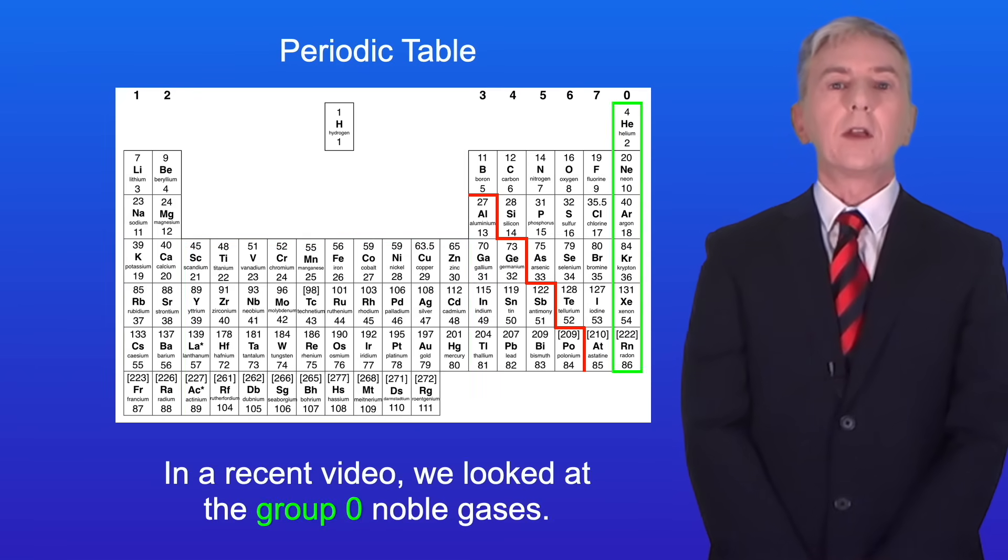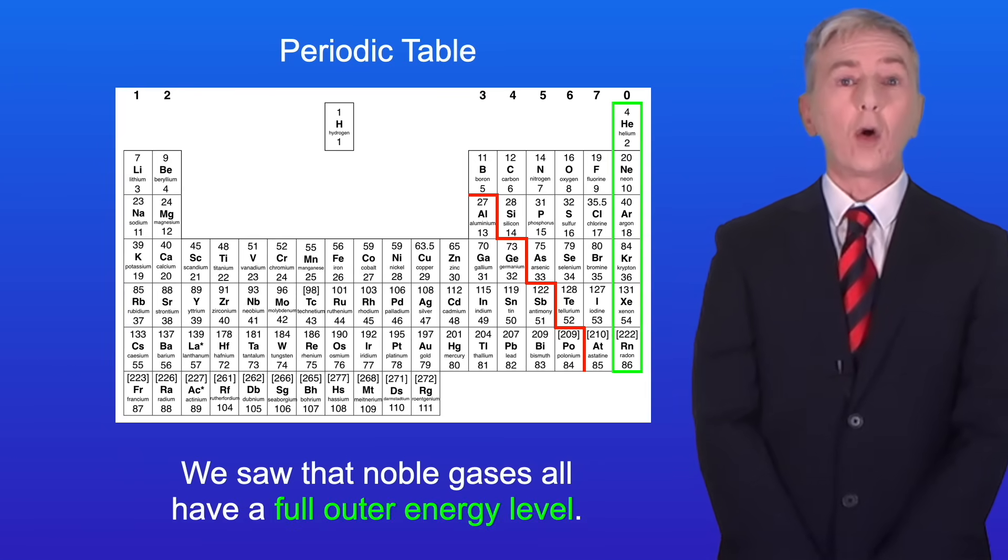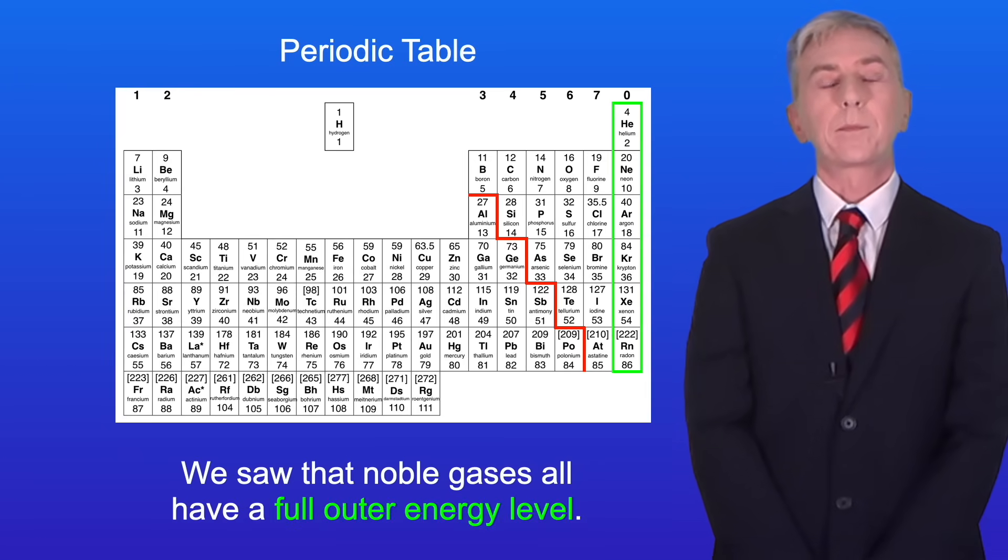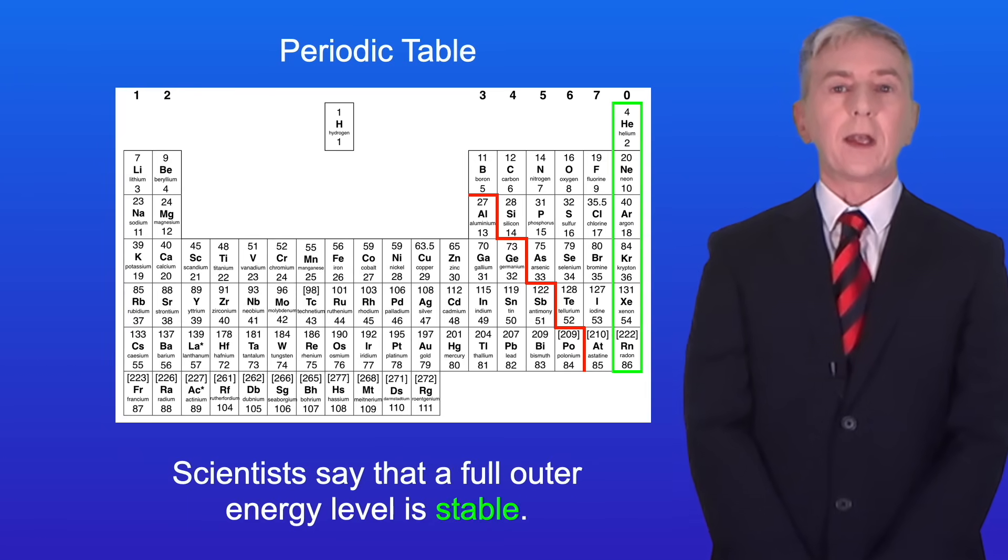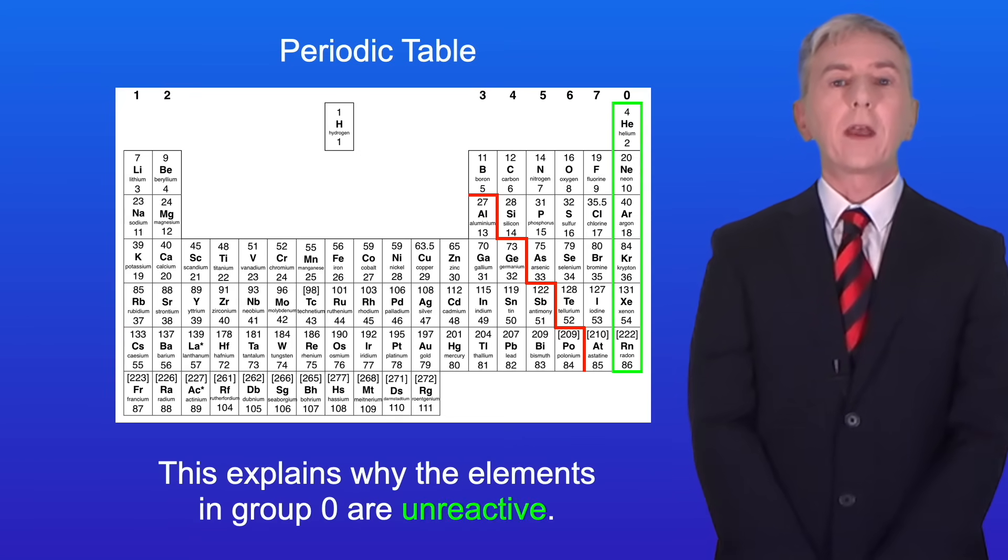In a recent video we looked at the group 0 noble gases. We saw that noble gases all have a full outer energy level. Now scientists say that a full outer energy level is stable and this explains why the elements in group 0 are unreactive.